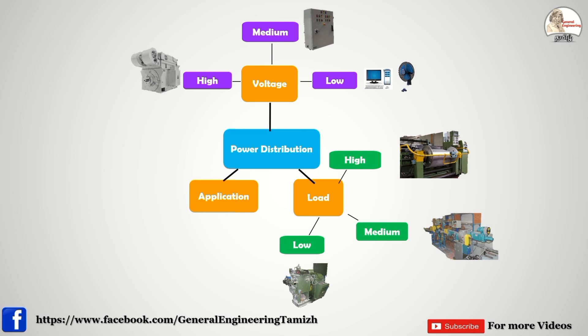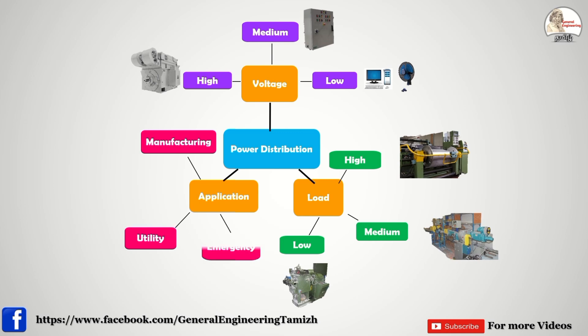For application-oriented segregation, we divide into three: manufacturing equipments, utility equipments, and emergency equipments. Manufacturing equipments are the production machines. Utility equipments include boiler, HVAC and related systems. Emergency equipments include lighting supply and firefighting systems. From this framework we can design our own power distribution system.